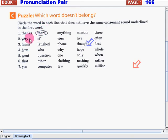Number 2. The underlined word is Very. Very has V sound. So which one do you think does not belong to the group? Great! It's often. The words of, view, and live have V sound except for the word often with F sound. Now, how about number 3? Funny is a word with F sound. Let's check: laugh, phone, thought, and first. Which word doesn't have F sound? Well done! The word is thought. Thought has voiceless TH sound and not F sound.